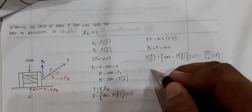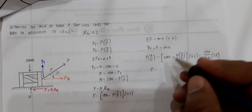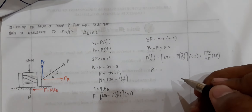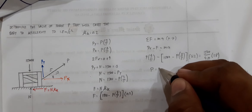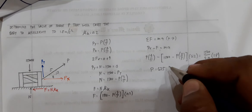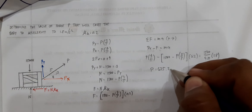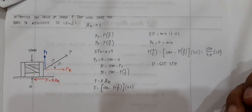Calculate for the value of P. You would get P equal to 625.25 Newtons.